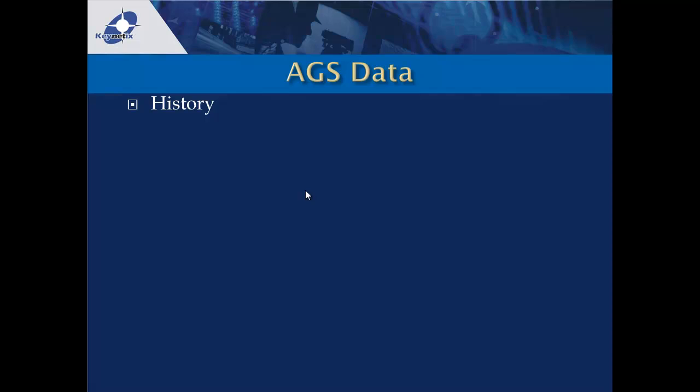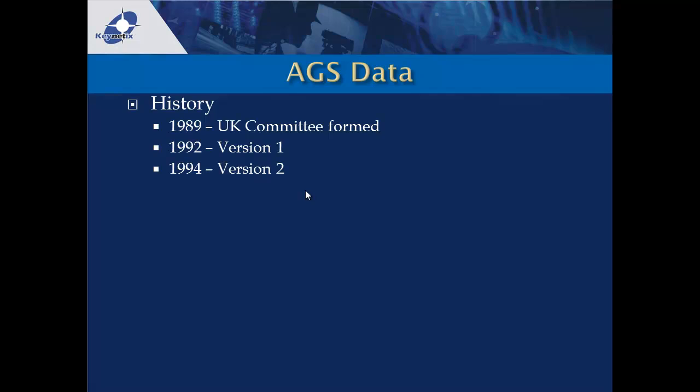How long has AGS data been around? The committee was effectively formed in 1989 and worked for three years to come up with version 1, followed reasonably quickly by version 2 to fix problems found in version 1. Also in 1994, the Hong Kong government mandated the Hong Kong AGS format — very similar to AGS 2 — for all projects in Hong Kong. Since then, every site investigation done for the government has included a CD, DVD, or floppy disk with AGS data, building a huge archive of nearly 20 years of SI data.